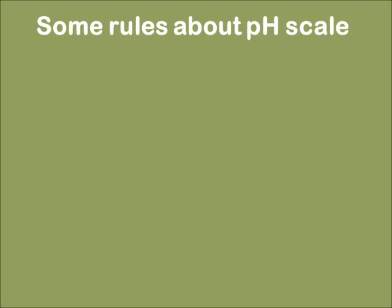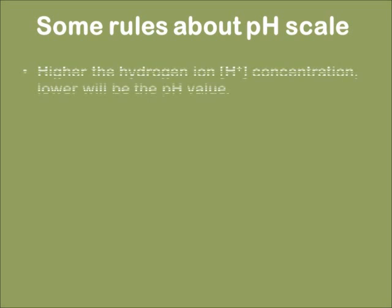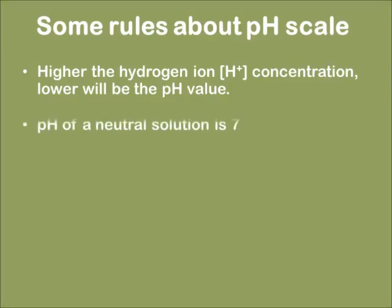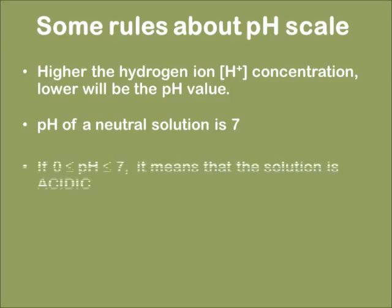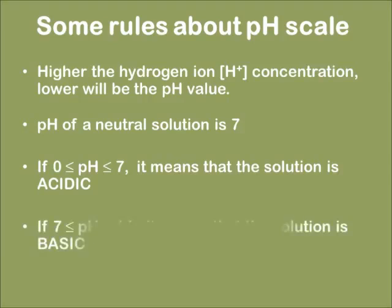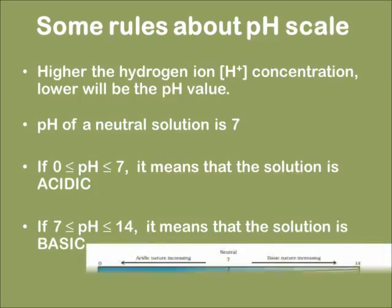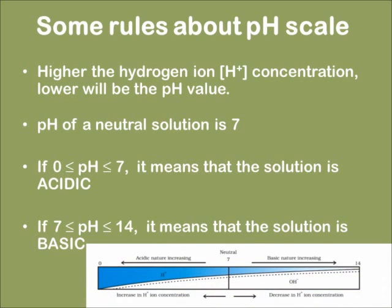Some rules about the pH scale: higher the hydrogen ion concentration, lower will be the value of pH. The pH of a neutral solution is 7. If the pH lies between 0 and 7, it means that the given solution is acidic in nature. If the pH lies between 7 and 14, it means that the solution is basic in nature. Given below is the density of hydrogen ions with respect to the pH.